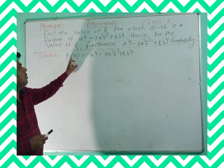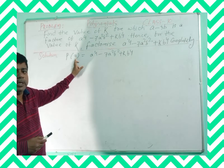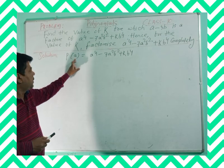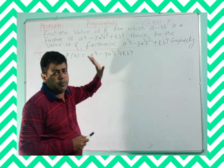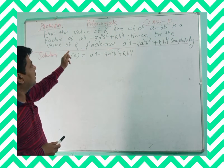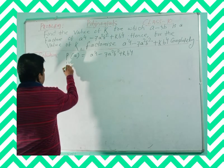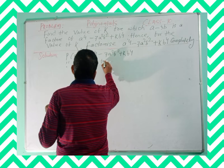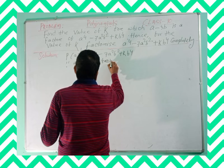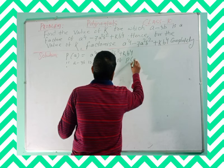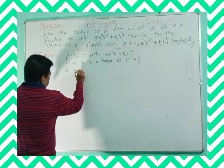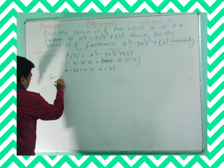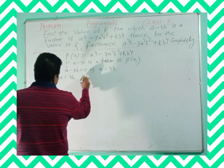Here the polynomial is given. It is a polynomial in a, where a is the variable. So the polynomial p of a is equal to a to the power 4 minus 7a squared b squared plus k b to the power 4. It is given that a minus 3b is a factor of the given polynomial. Since a minus 3b is a factor, we can equate a minus 3b equal to 0, giving a equal to 3b. Hence for a equal to 3b, the value of the polynomial p of a must be equal to 0.